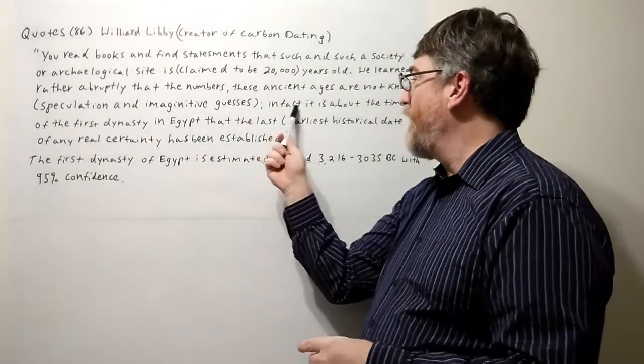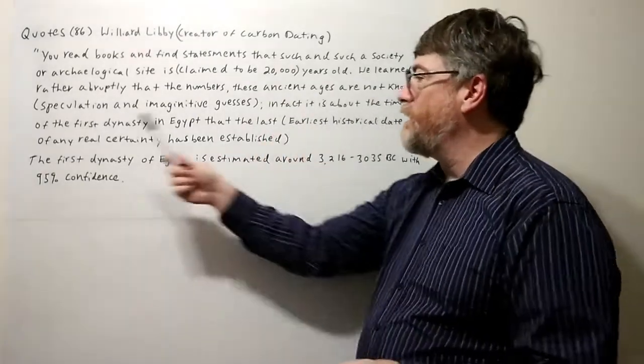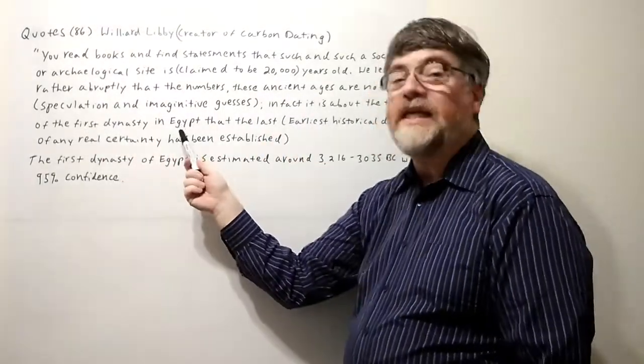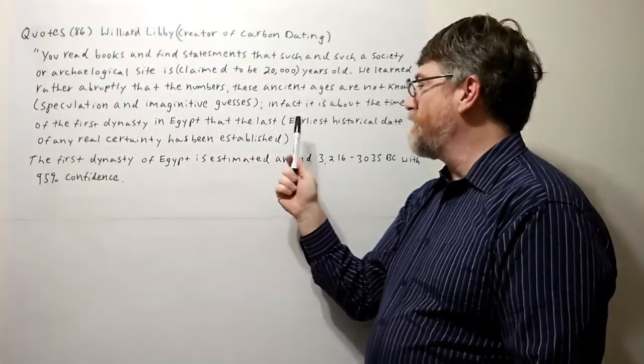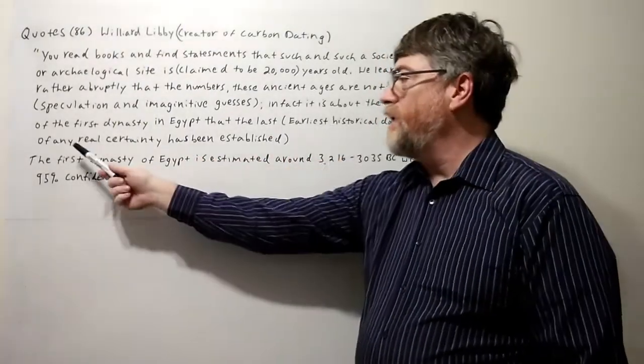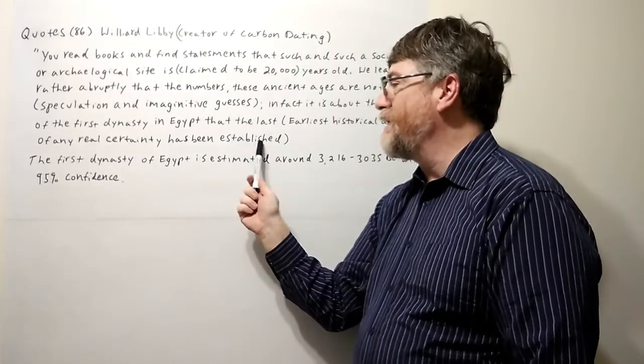In fact, it is about the time of the First Dynasty in Egypt that the last earliest historical date of any certainty has been established.